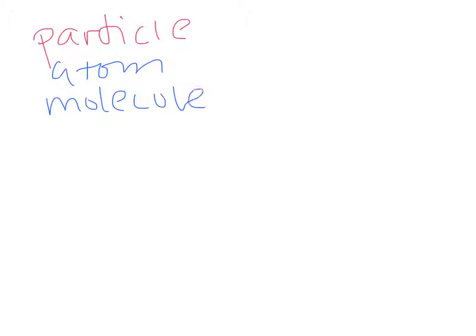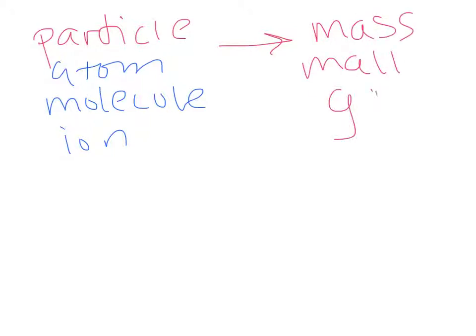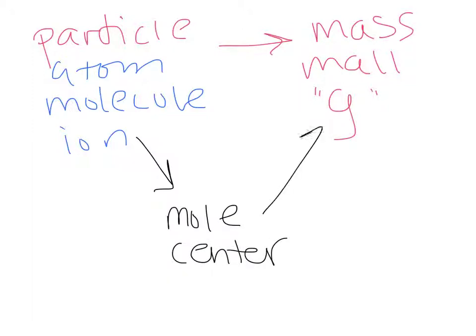Now if instead I wanted to go from Particle Parkway — where I have an atom, a molecule, or an ion — and I need to get to my mass in grams, I need to go through mole center, and then from mole center to mass. Going from Particle Parkway to mole center, I need to use Avogadro's number, 6.02 times 10 to the 23rd. And then from mole center to mass, I have to use my molar mass.